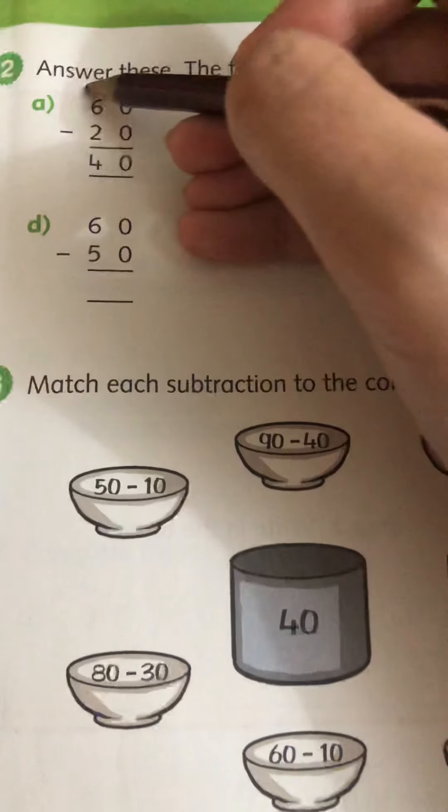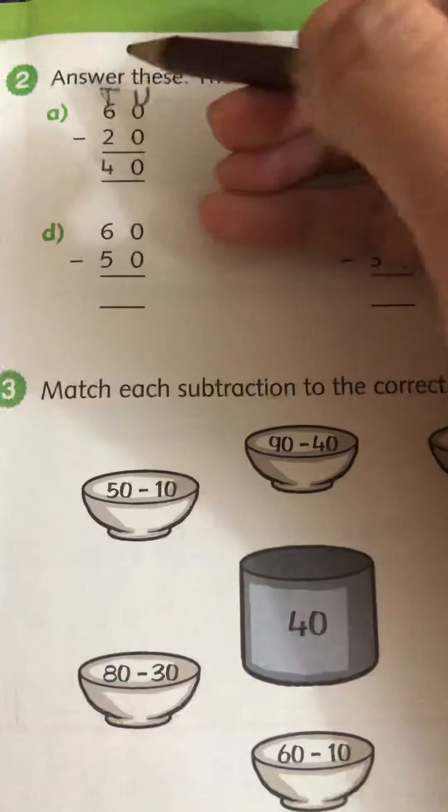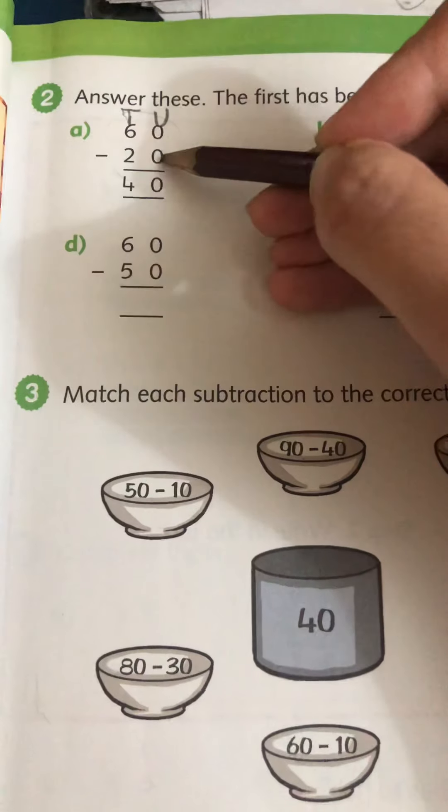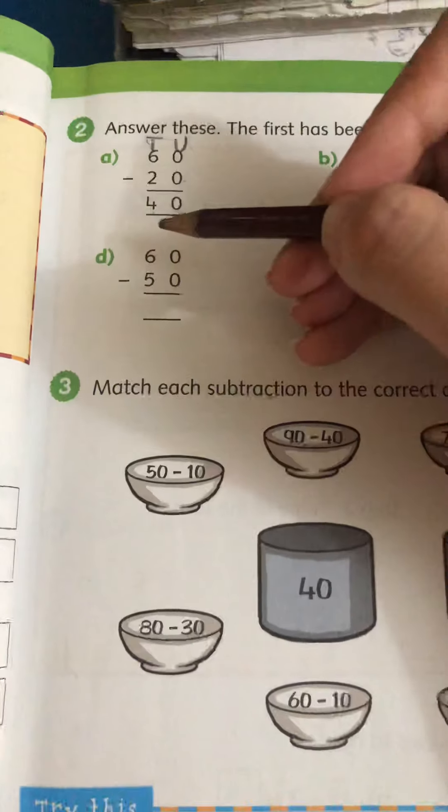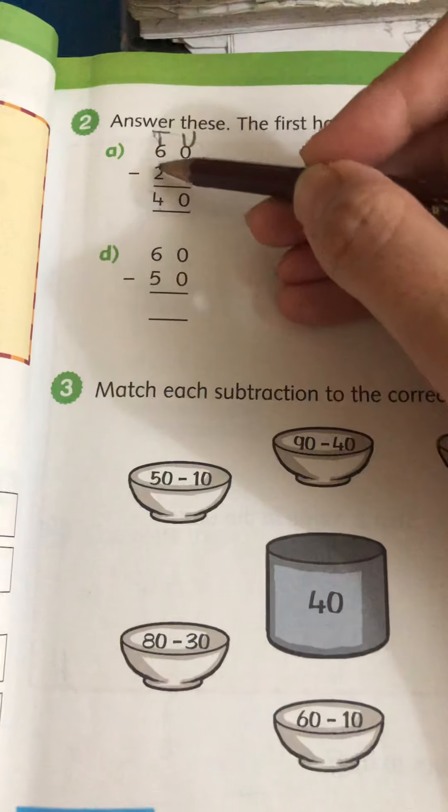And T here, tens. So 0 take away 0 is 0. We know that. 6 take away 4. You can use any, sorry 6 take away 2. You can use any method.